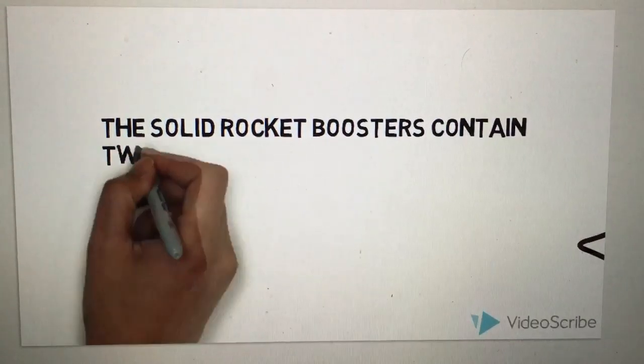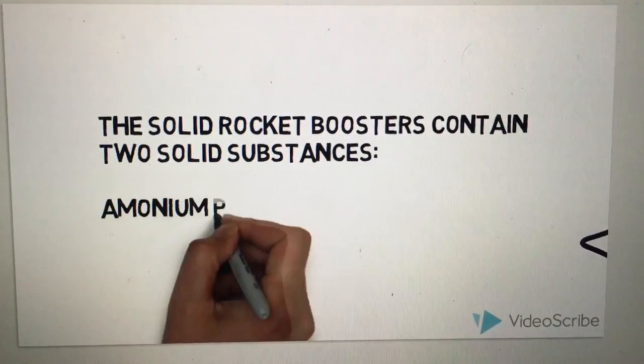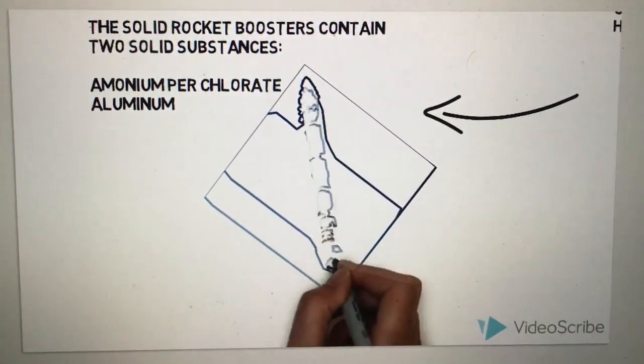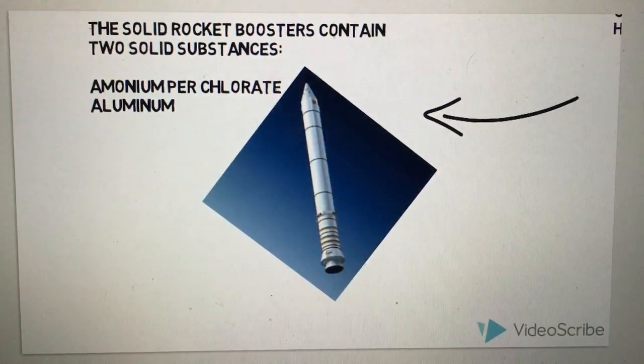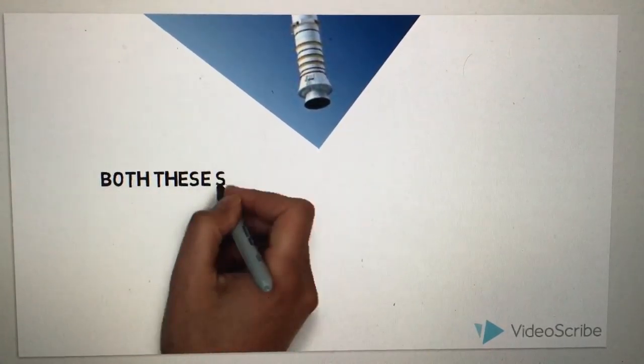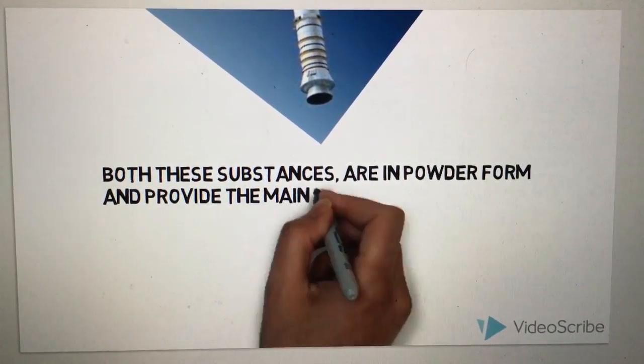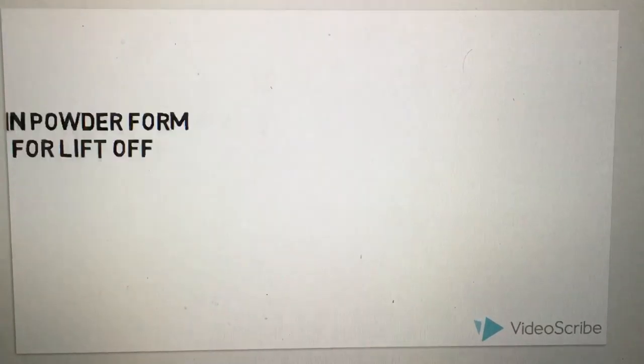The solid rocket booster contains two solid substances, ammonium perchlorate and aluminum. Both substances are in powdered form and provide the main thrust for liftoff.